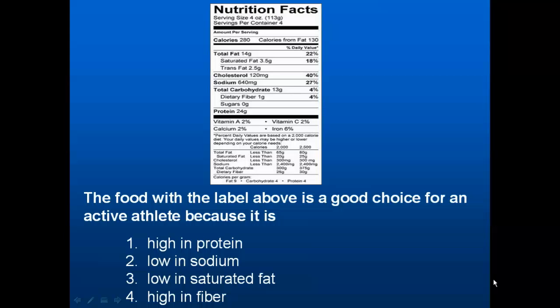Here's another question about nutrition: 'The food with the label above is a good choice for an active athlete because it is...' This question requires students to know the functions of protein, sodium, saturated fat, and fiber in the body. It also requires students to determine which of those nutrients an active athlete may need. Lastly, students need to combine all of that knowledge and analyze the label. In this case, the 24 grams of protein would be the best answer, although students need to know that one gram of fiber really isn't that much.